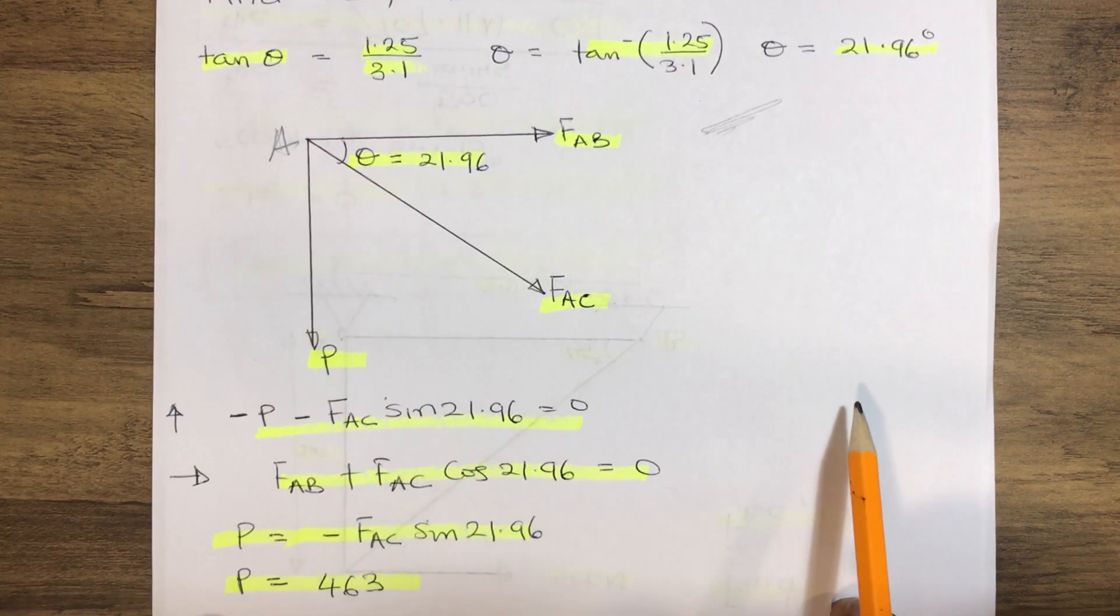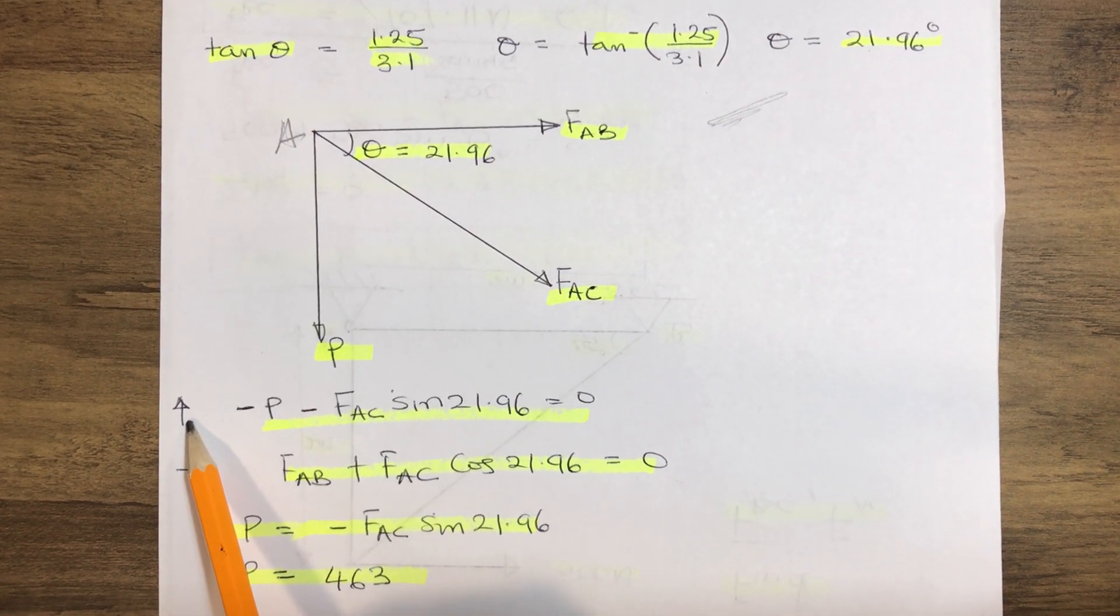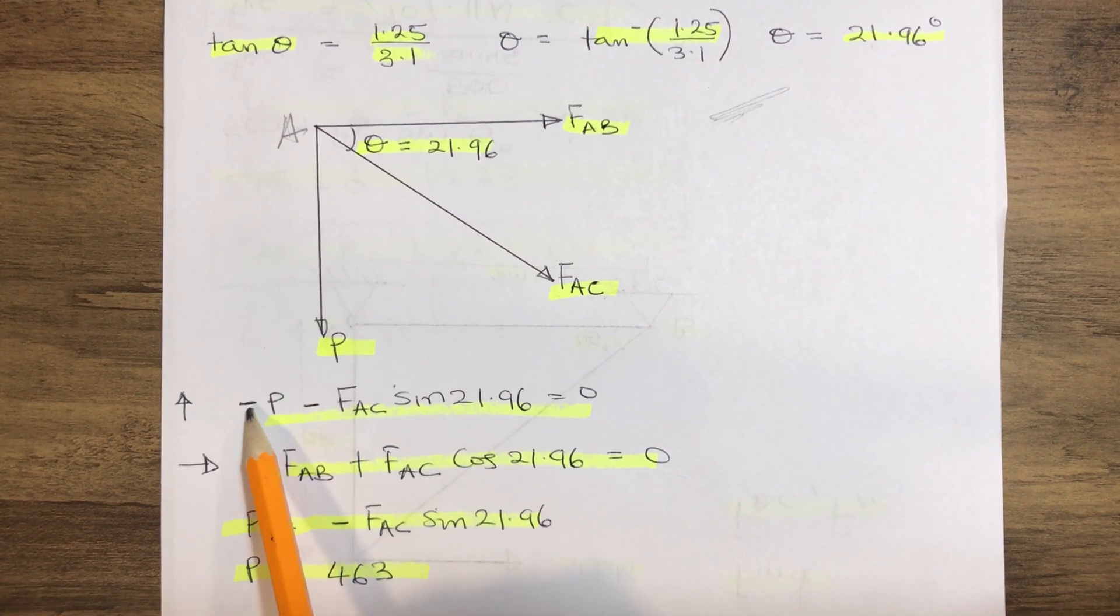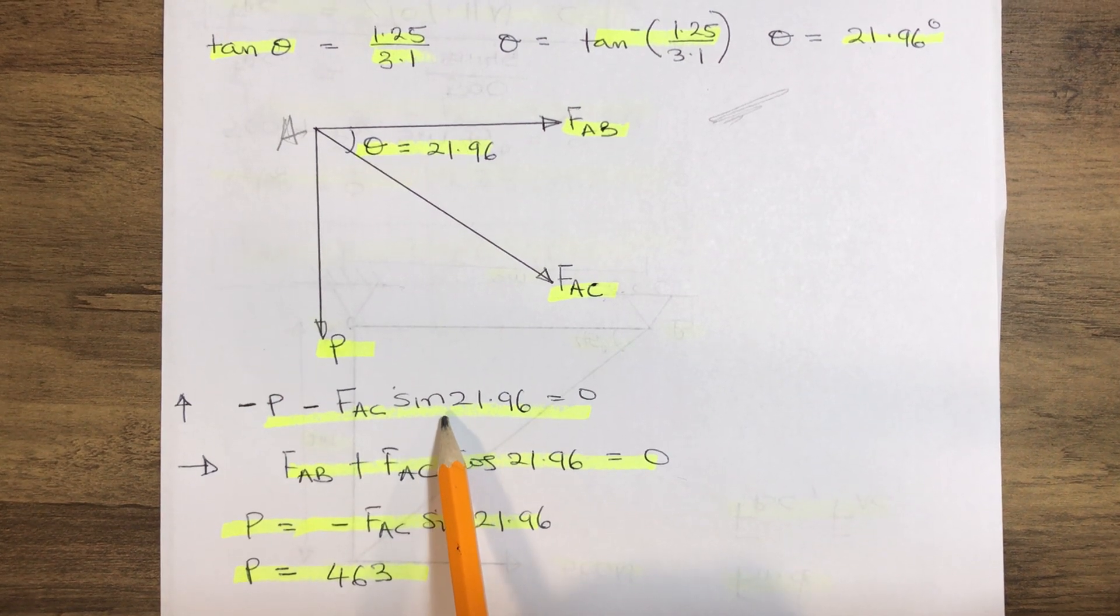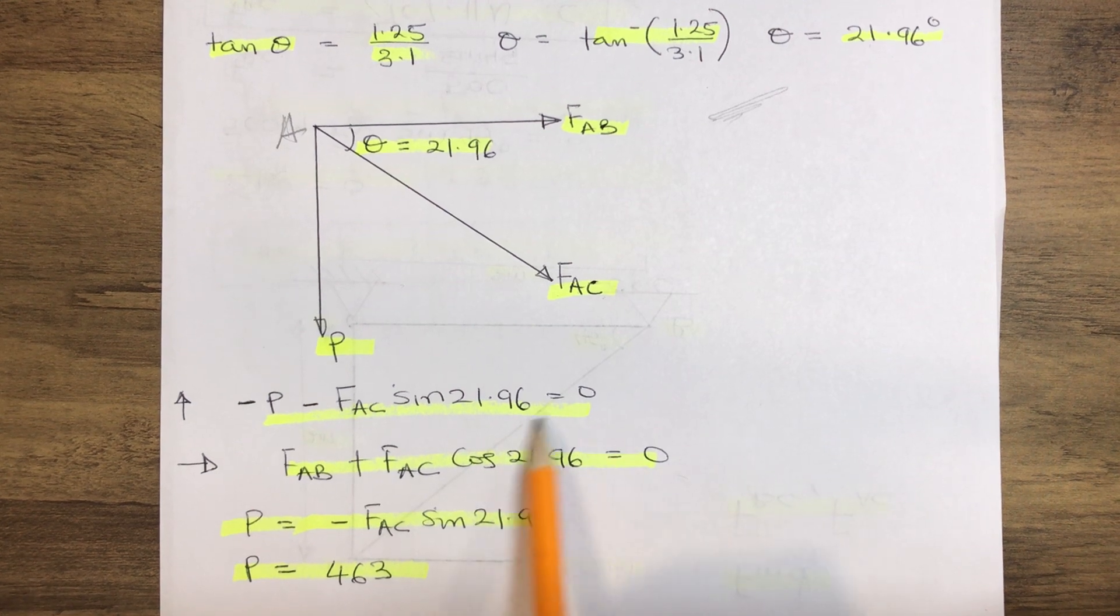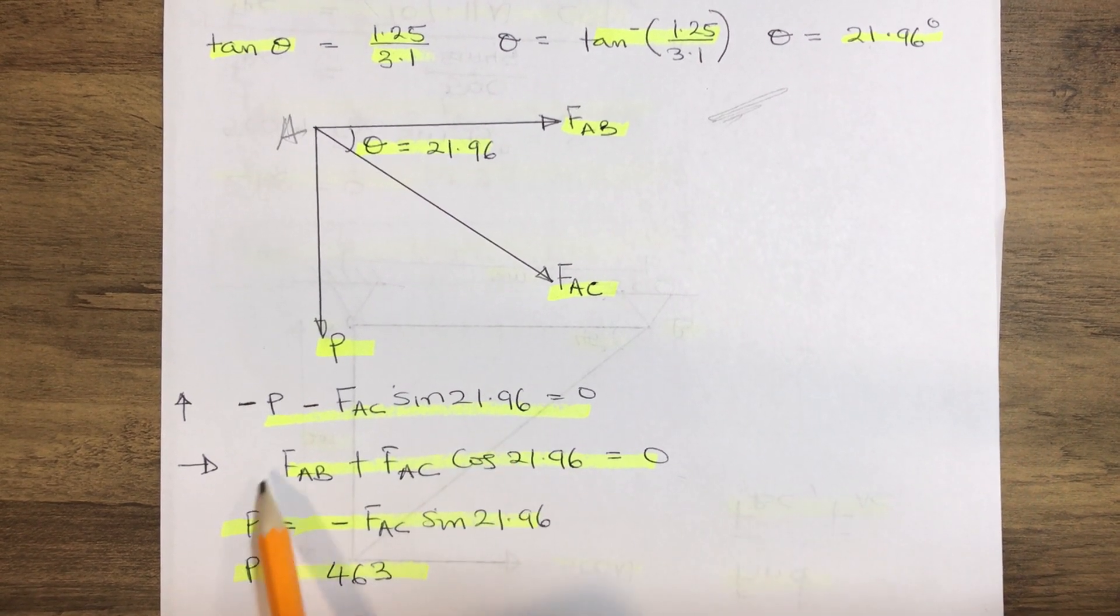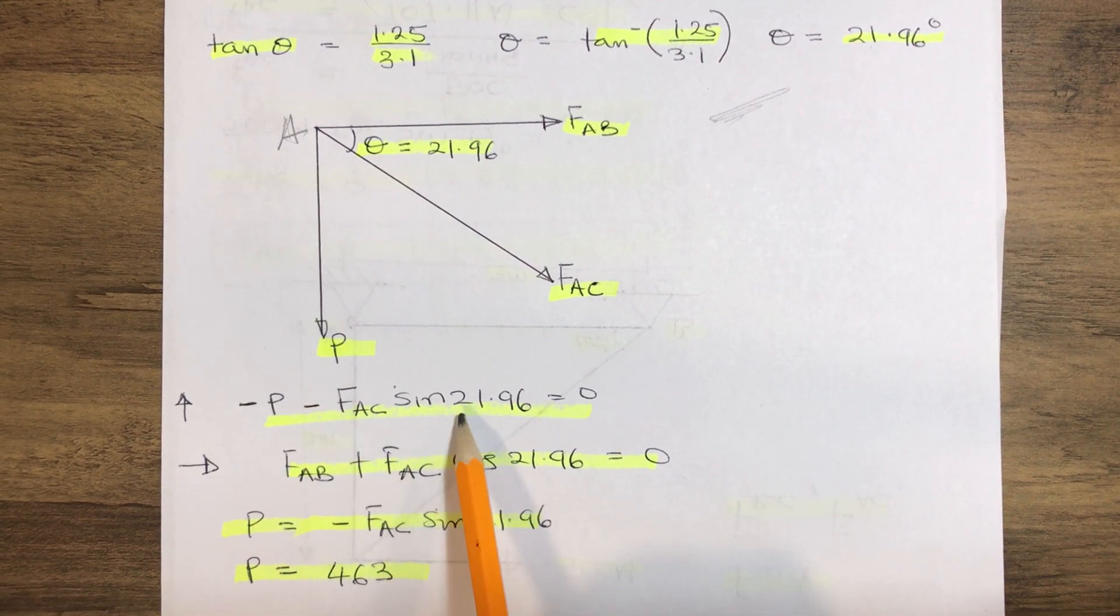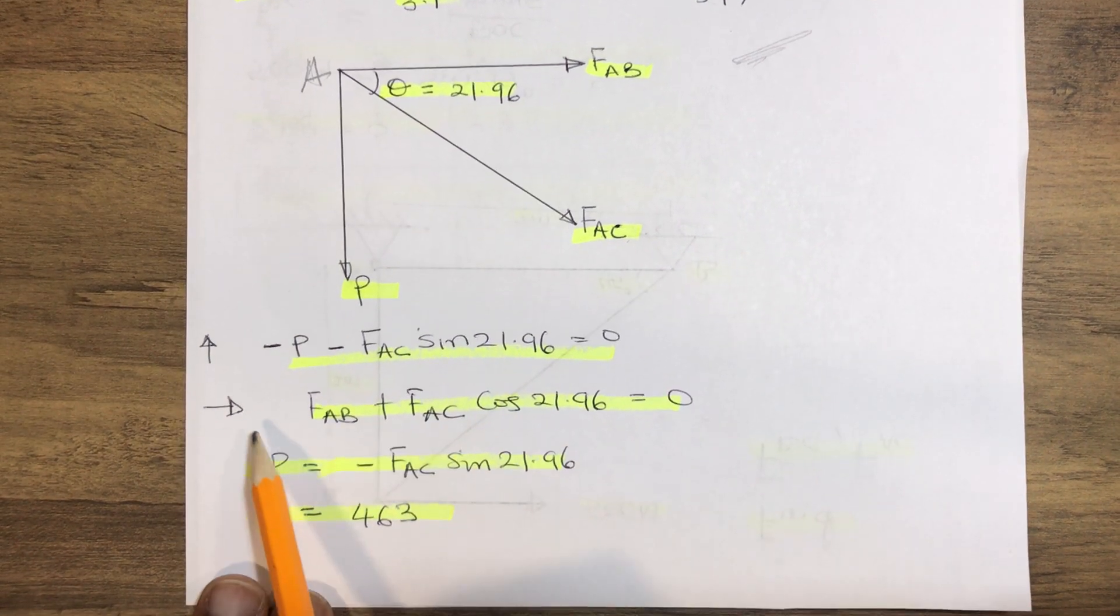So in order to resolve our vertical forces to get the equilibrium, our vertical forces which is minus P acting downward minus FAC sine 21.96 equals zero. So therefore by finding the equilibrium on the vertical axis.